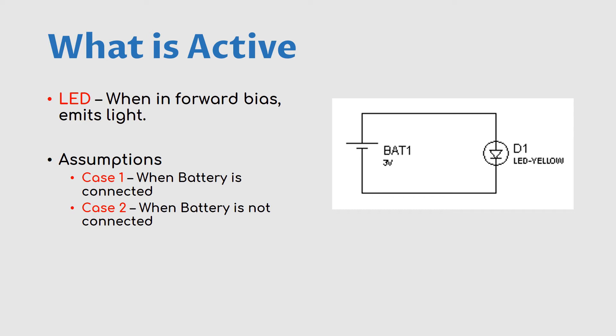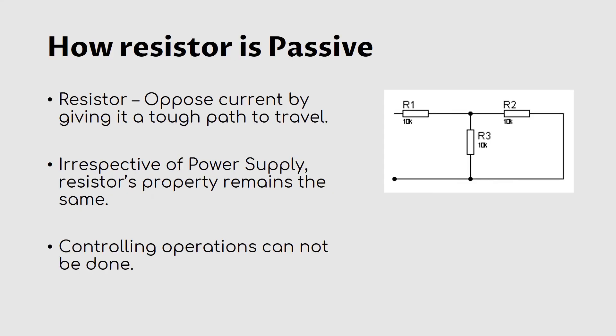In case two, when the battery is not connected, there is no power source. The property of an LED — emitting light when connected in forward bias — will never happen when the battery is not there. So to perform the light-emitting operation, the LED needs a power source.